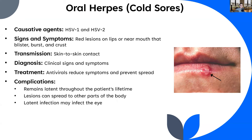Herpes viruses remain latent - you get it once, then it hides and comes back from time to time. Lesions can also spread to other parts of the body - oral herpes can turn into genital herpes if contact between those regions occurs. Another important complication is that the latent infection can actually reinfect the eye. The herpes virus tends to live in the trigeminal nerve, which innervates both the lips and mouth area but also the eyes. If it gets into the ocular branch of the trigeminal nerve, there is potential for a viral infection of the eye, which can be quite serious.